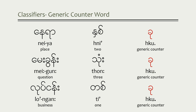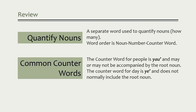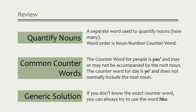Definitely learn the counter word for people and days first. Let's review what we discussed in this lesson. We talked about quantifying nouns or counter words — a separate word used to identify how many of something or someone there is. The order is: noun, number, then counter word, although sometimes you won't need the root noun. The counter word for people is 'yau', and the counter word for day is 'yet'. Many words use the generic counter word 'ku', and if you don't know the exact counter word, you can always try this one.